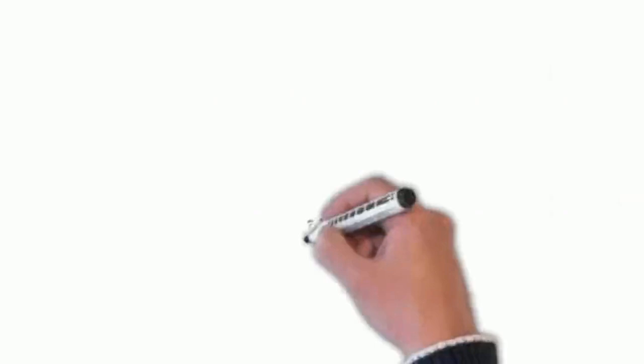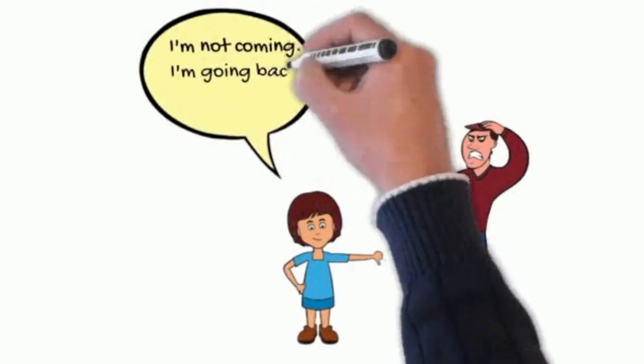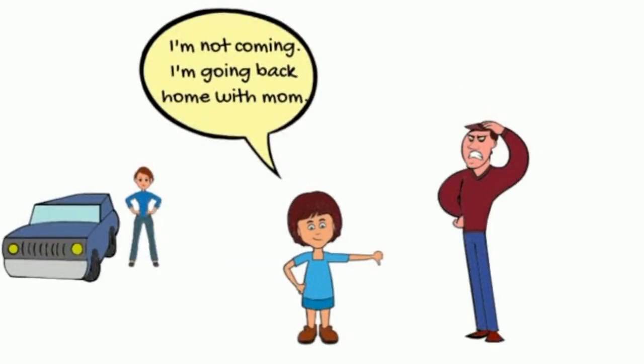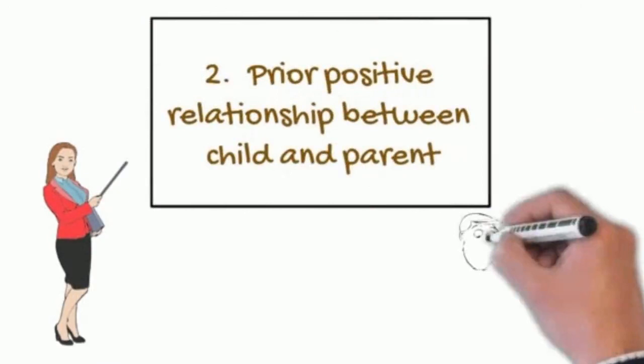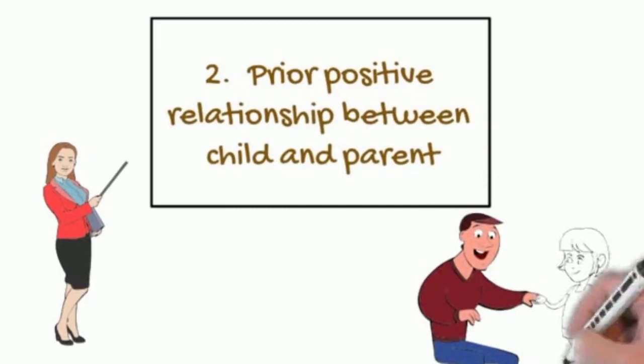Factor one, the child manifests contact resistance or refusal. That is, avoids a relationship with one of the parents. Factor two, there was a prior positive relationship between the child and the now rejected parent. That means that whatever flaws the targeted parent has, it didn't prevent a close, loving attachment bond to the child who's now rejecting them.